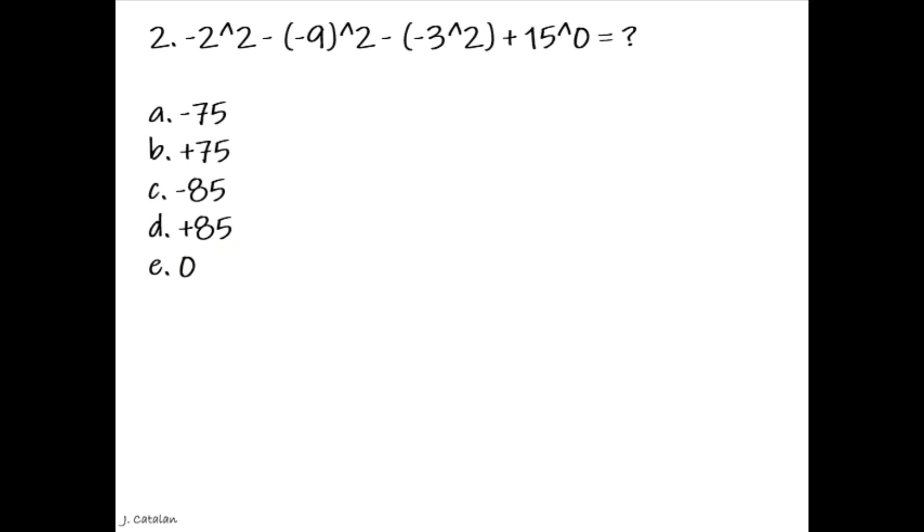Question: Negative 2 carat 2 subtracted by the result of negative 9 carat 2, subtracted by the result of negative 3 carat 2, added by the result of 15 to the power of 0, is equals to. Answer: Negative 75.